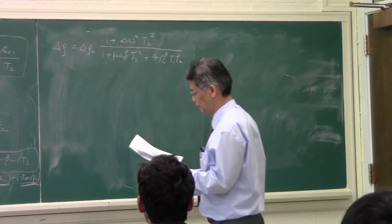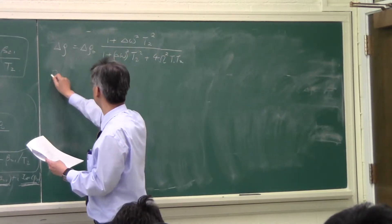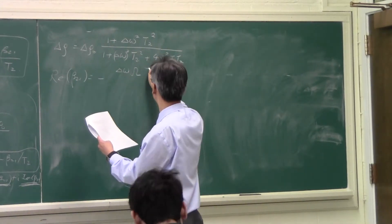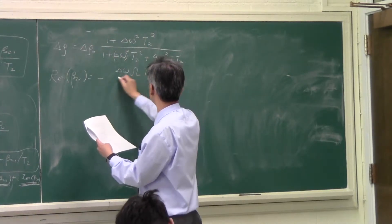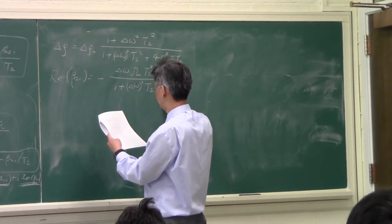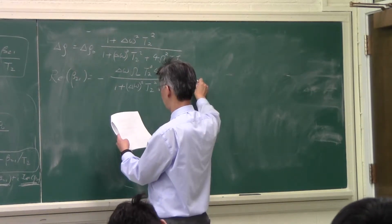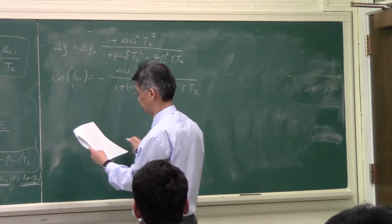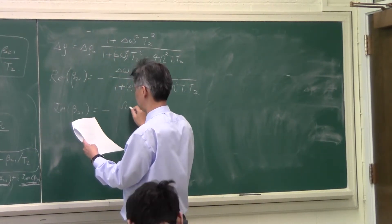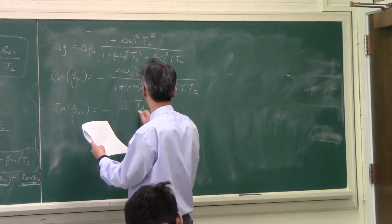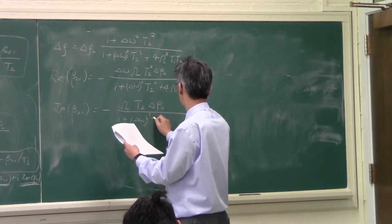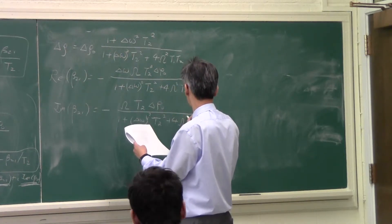Or capital Omega squared T1 T2 — that is delta rho. Then you can get the solution for beta to one. Beta to one is equal to minus delta omega capital Omega T2 squared delta rho naught over one plus delta omega squared T2 squared, over one plus delta omega squared T2 squared or Omega squared T1 T2. And then you have the imaginary part coming out of beta to one, which is equal to minus capital Omega T2 delta rho naught over one plus delta omega squared T2 squared plus four Omega squared T1 T2.